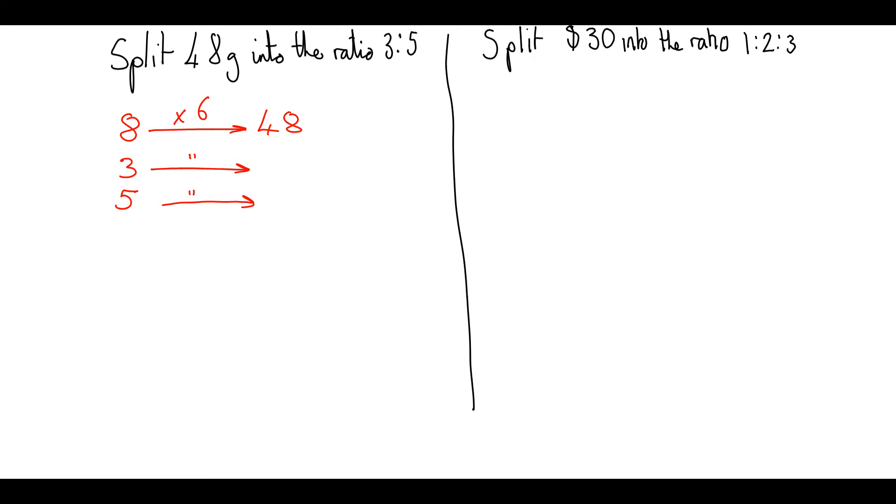So 3 parts is going to be equivalent to 3 times 6, which is 18 grams in this case. And 5 parts is going to be 5 multiplied by 6, which is 30 grams. And we can see that 18 plus 30 is 48, so we've probably done it correct. So the answer to our problem is going to be 18 grams to 30 grams.